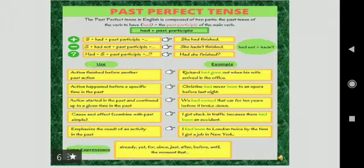Cause and effect. I got stuck in traffic because there had been an accident. Cause is also there and effect is also there. Due to an accident they got stuck in traffic. To emphasize the result of an activity in the past. I had been to London twice by the time I got a job in New York. These are the examples where you can frame the sentences in past perfect tense.